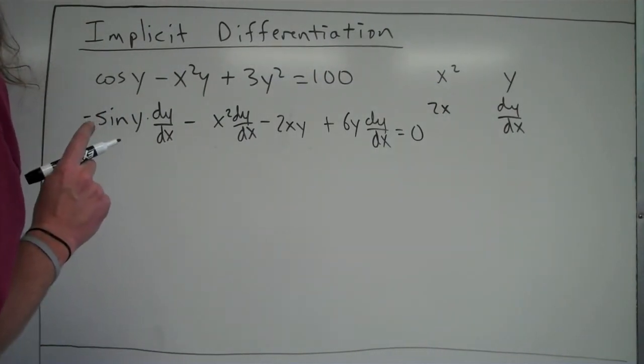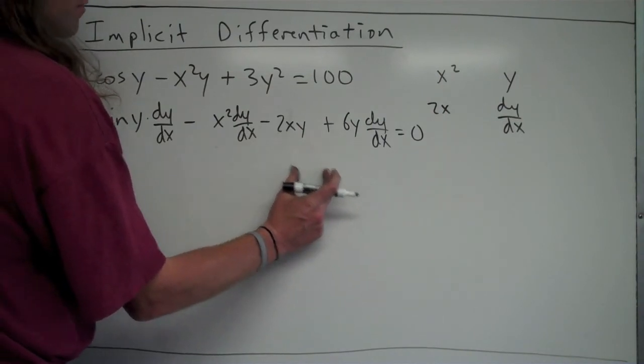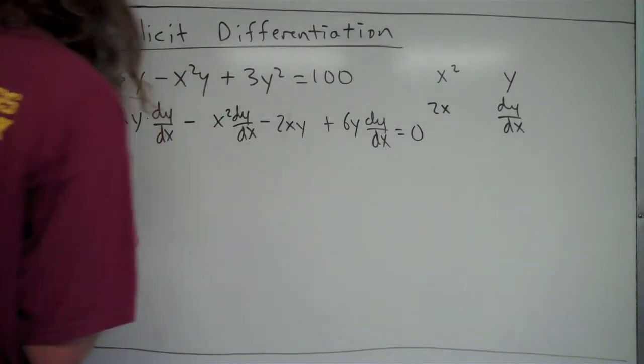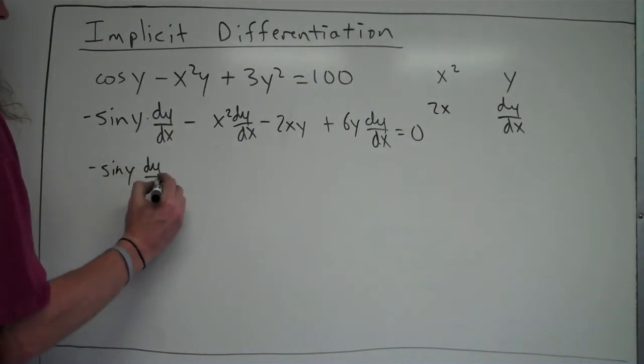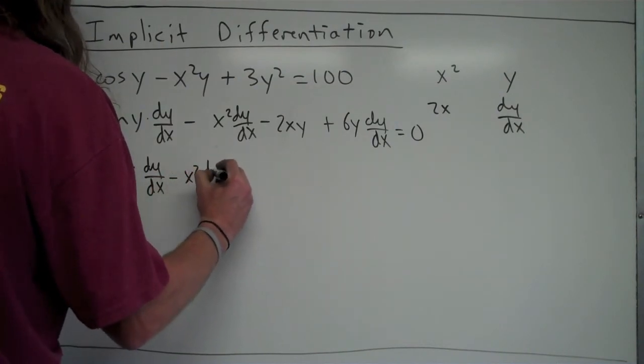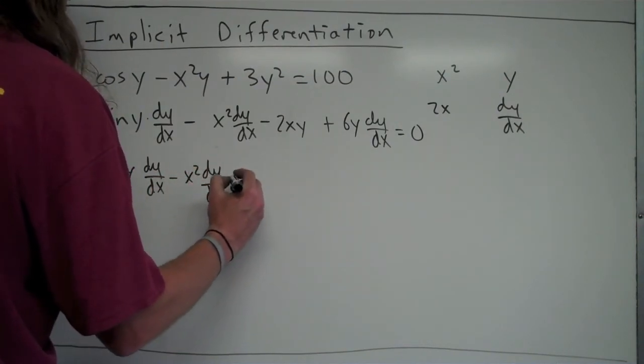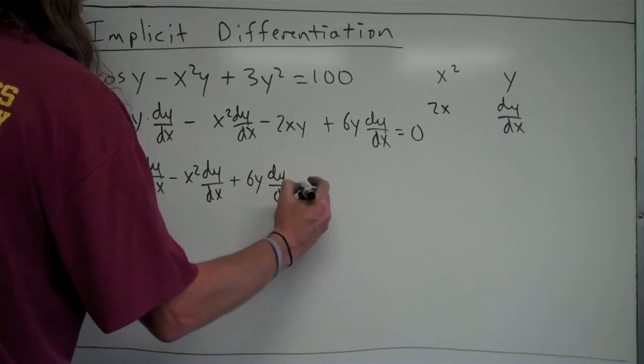But next thing, this is my only term that doesn't have a dy over dx, so I'll move that to the right side, keeping all the other terms on the left side, so negative sine y dy over dx minus x squared dy over dx plus 6y dy over dx equals